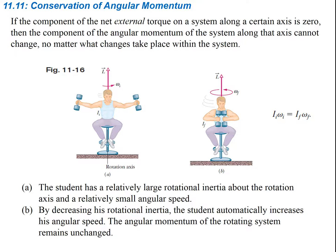If a component of the net external torque on a system along a certain axis is zero, then the component of angular momentum along that axis cannot change. The direction of angular momentum is along the axis of rotation, determined using the right-hand rule.